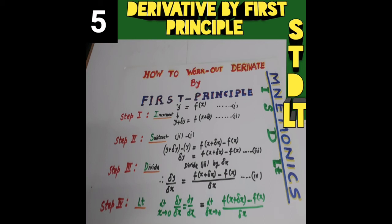D stands for Divide — divide by delta X. LT stands for Limit — take the limit as delta X goes to 0. This gives the derivative: F(X plus delta X) minus F(X), all over delta X.